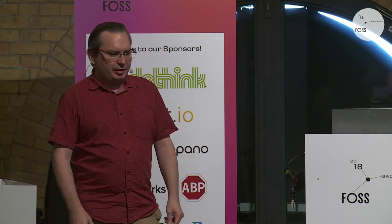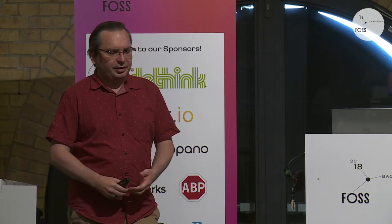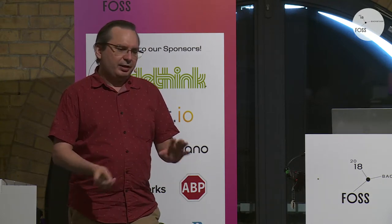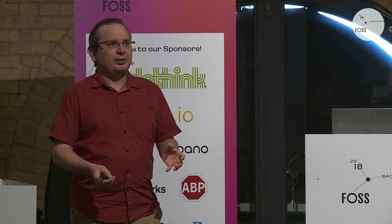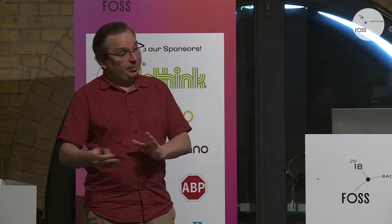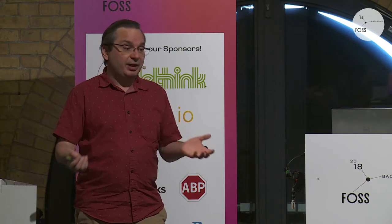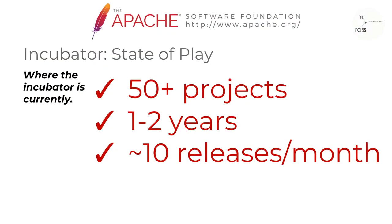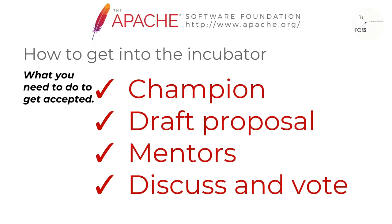The incubator currently has 50 projects in incubation. They generally stay in incubation between one and two years. Some are shorter, some are longer, and some never leave the incubator at all — I think the current record is five or six years. There are about 10 releases a month coming out of the incubator from these podlings as they learn the process.